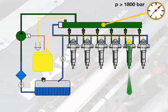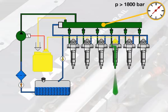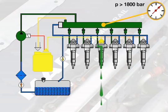The common rail system provides high injection pressure even at low engine speeds and regardless of engine load. The injected fuel quantity can be divided into pilot, main, and secondary injection.